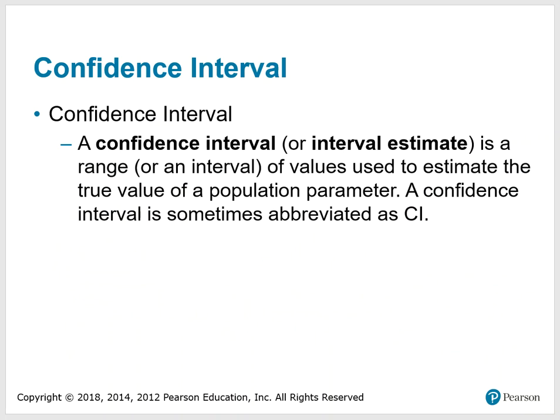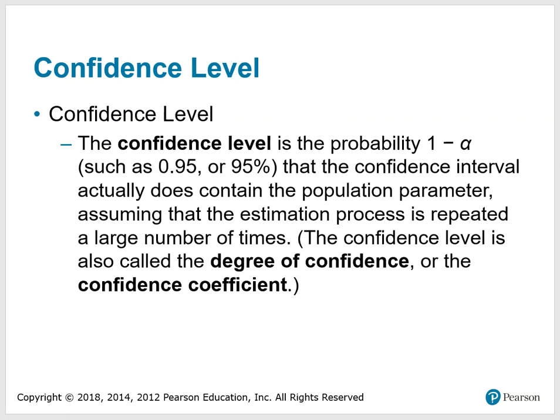A confidence interval, or interval estimate, is a range of values used to estimate the true value of a population parameter, sometimes abbreviated CI. Instead of one particular value, we use a range of values to estimate our population parameter. The confidence level is the probability 1 minus alpha, such as 0.95 or 95%, that the confidence interval actually does contain the population parameter, assuming the estimation process is repeated a large number of times. The confidence level is also called the degree of confidence or the confidence coefficient.